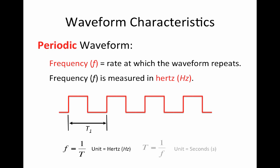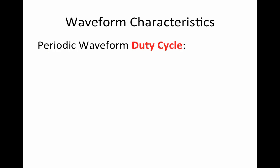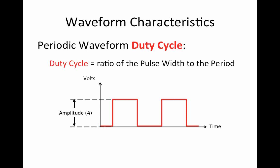We can rearrange the relationship to calculate the period, T. T is equal to 1 over F. An important characteristic of a periodic digital waveform is its duty cycle. This represents the ratio of the pulse width, TW, to the period, T. It can be expressed as a percentage.